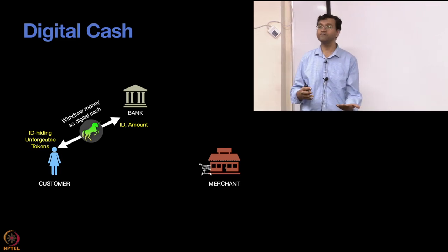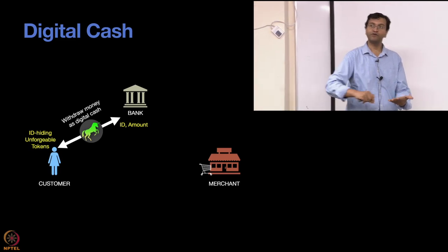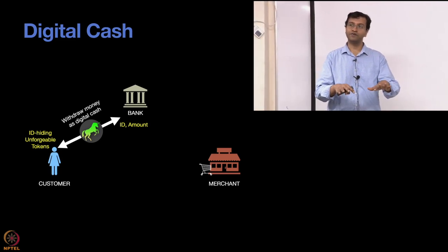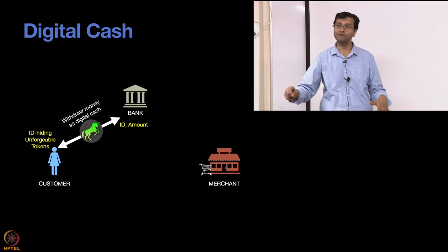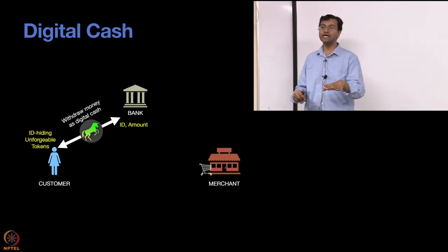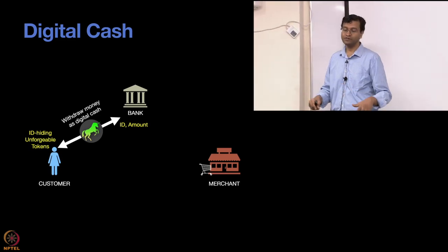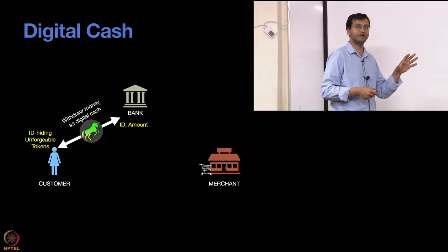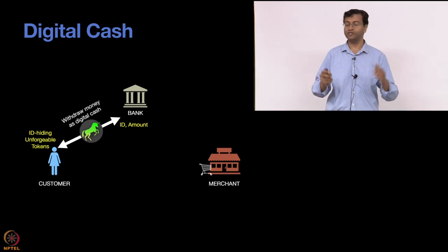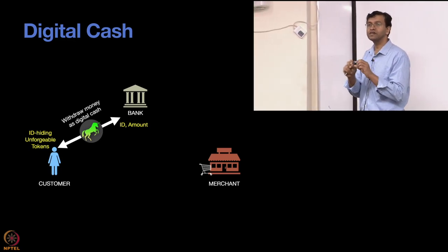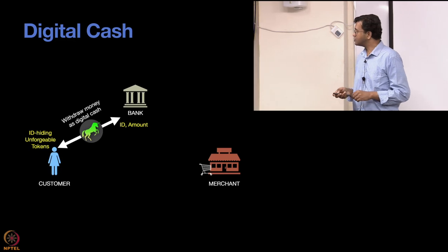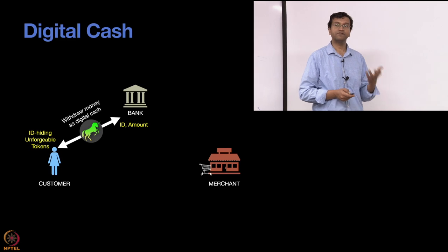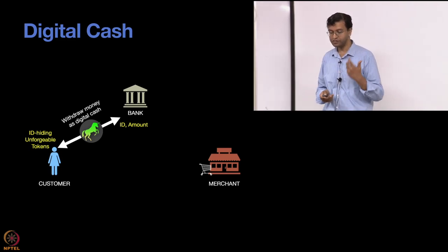It's like something you do in the physical world. You have a sheet of paper you want to sign at the bottom without reading the content — you put carbon paper on top of it and sign on top of the carbon paper. So you don't know what you're signing, but for some reason you're happy to sign it. Here also, the bank is happy to sign it — they know they're signing a token for this much amount, but they don't know exactly what the content of that token is. The customer will get these signed, unforgeable tokens.